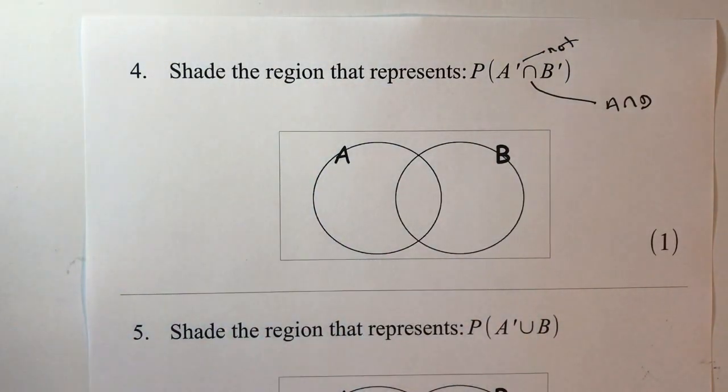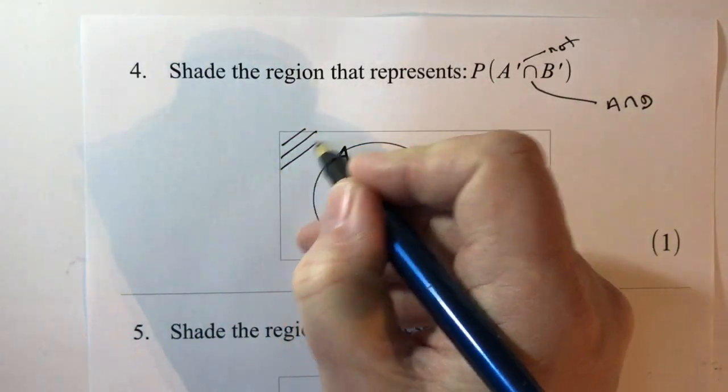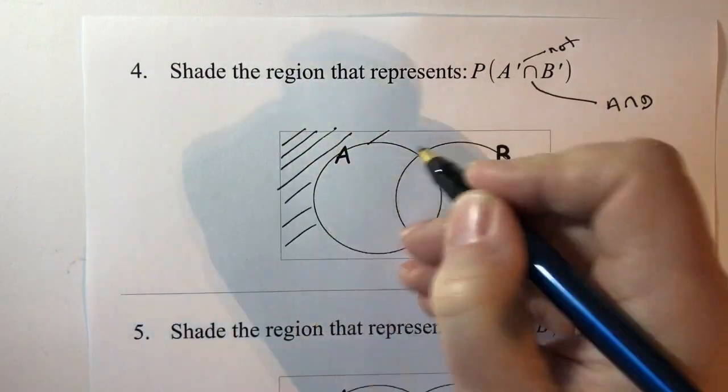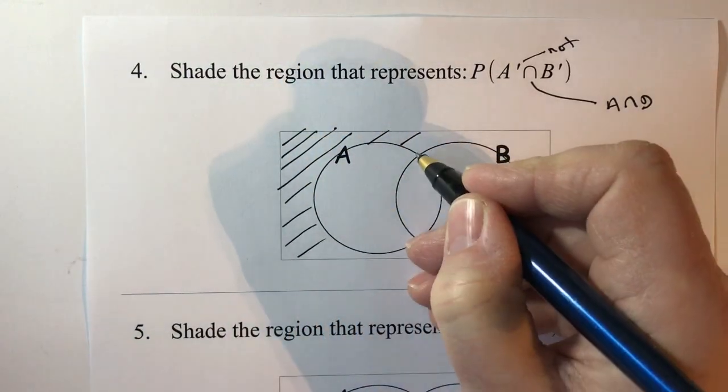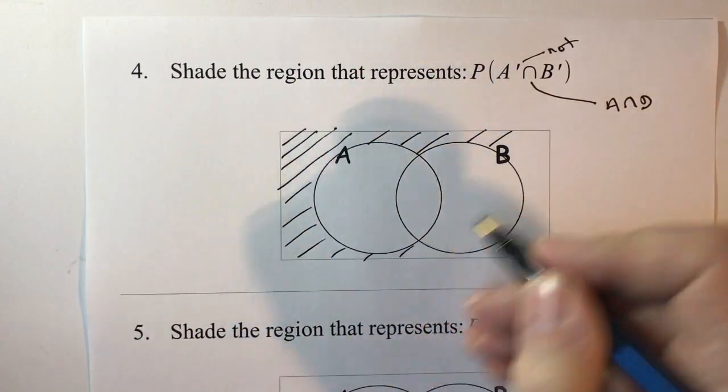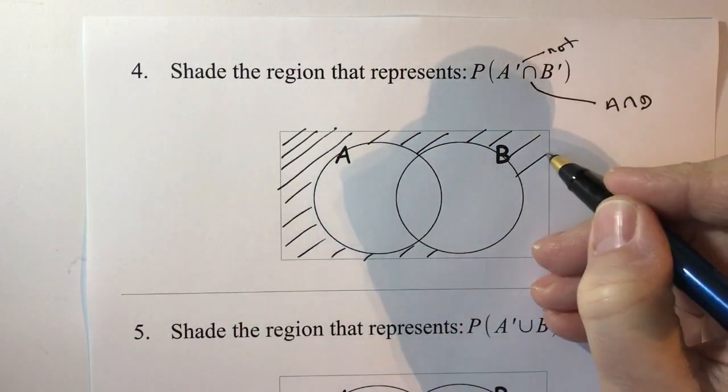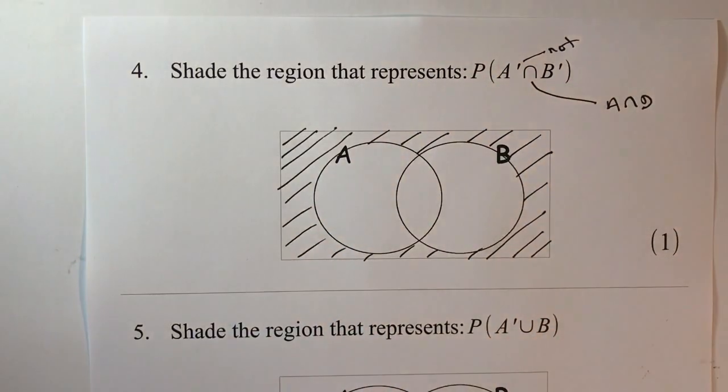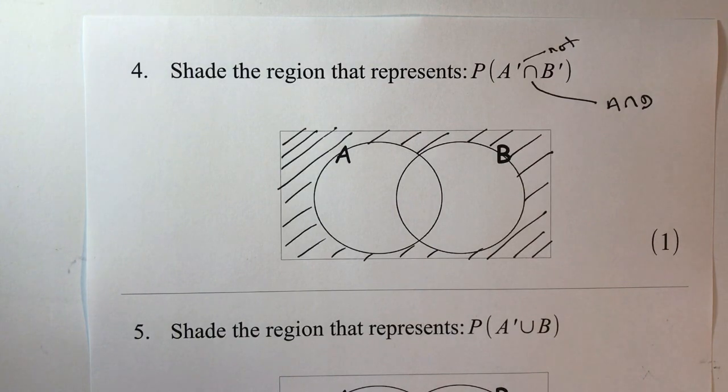So people who don't like apples and don't like bananas, and that's going to be represented by the rest of the people within the information that we're representing. So we would just simply shade that in and that would give us all of those people. Hope that's alright, we're going to move on then to question number five.